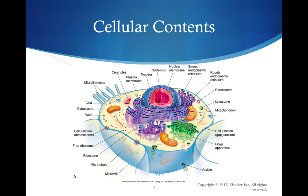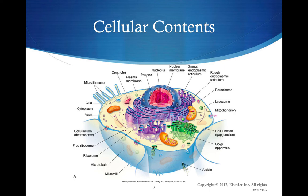Lysosomes are where phagocytosis takes place. The Golgi complex stores all the energy packages to allow the cells to transport things. And the cell membrane is where diffusion, osmosis, and cell recognition takes place.